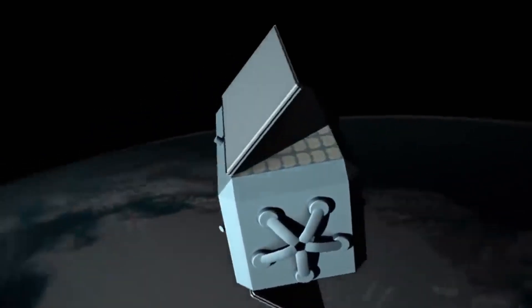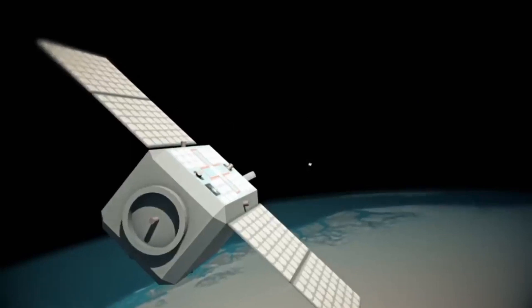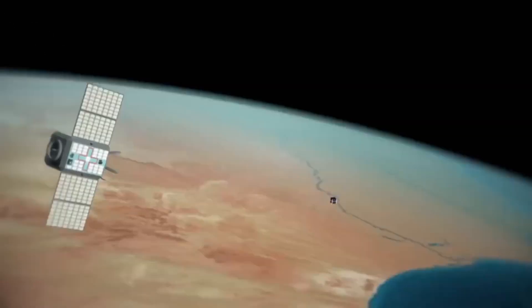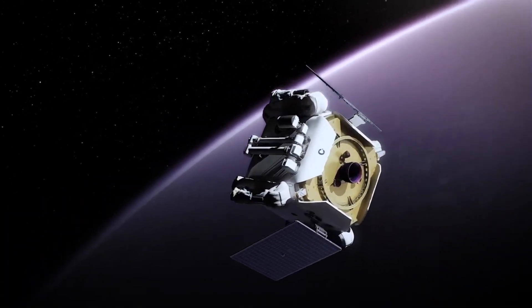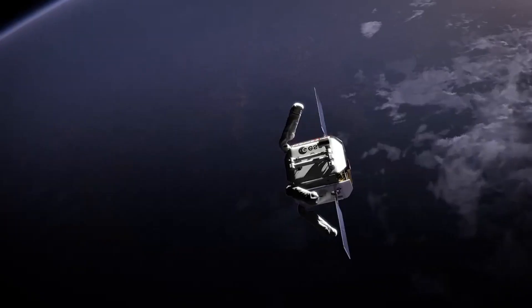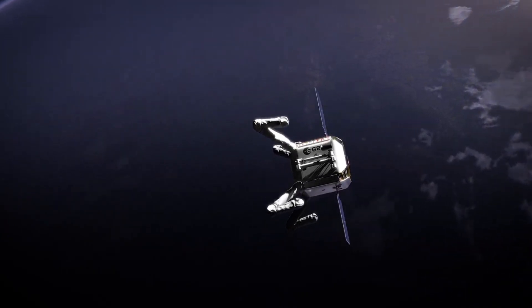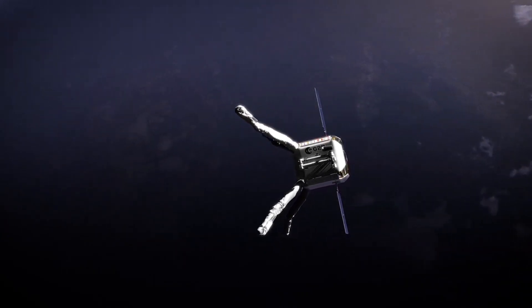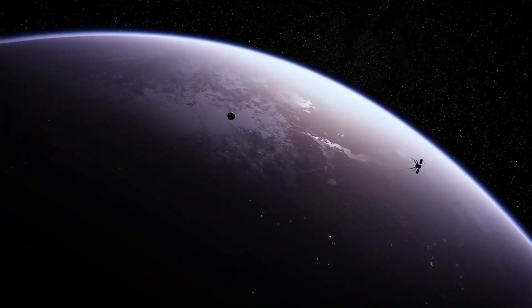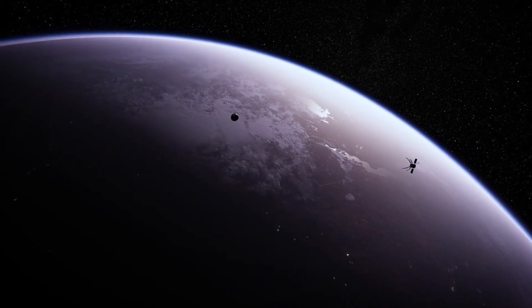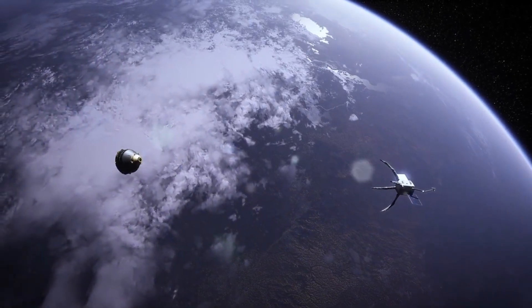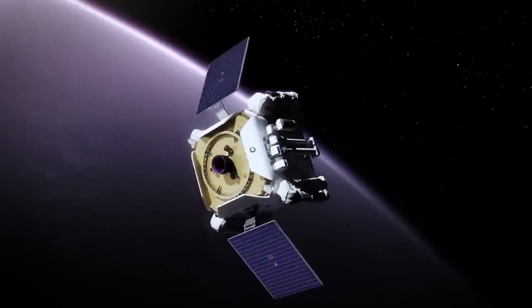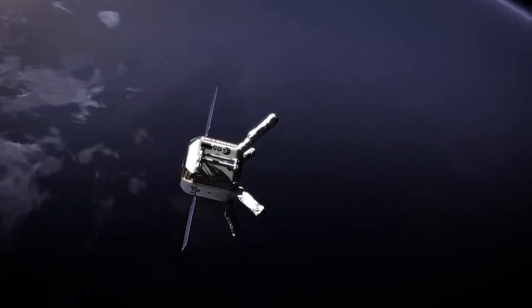Clear Space One will be the first space mission to remove an item of debris from orbit, planned for launch in 2025. The mission is being procured as a service contract with a startup-led commercial consortium to help establish a new market for in-orbit servicing as well as debris removal. The mission will target the VESPA Vega Secondary Payload Adapter left by Arianespace's second Vega mission in 2013. The purpose is to demonstrate the capabilities of the Clear Space One space cleaner with four robotic arms.